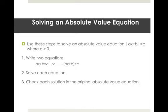Use these steps to solve an absolute value equation: absolute value of AX plus B equals C, where C is greater than zero. Step one, write two equations — AX plus B equals C, or negative quantity AX plus B equals C — because for any distance, there are two values that have that distance from B. Then solve each equation and check each solution in the original absolute value equation.